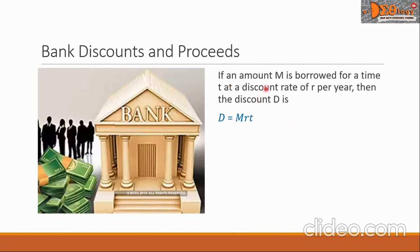If an amount capital M is borrowed for a time T at a discount rate of R per year, then the discount D is given by this formula: D equals capital M times R times T. The proceeds P, the actual amount the borrower gets, is given by this formula. Proceeds P equals M, that is the loan amount, minus D, that stands for discount.